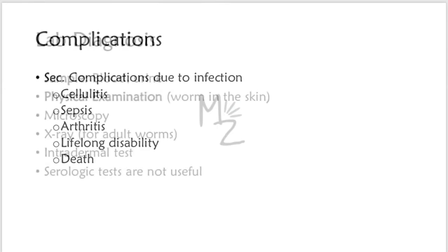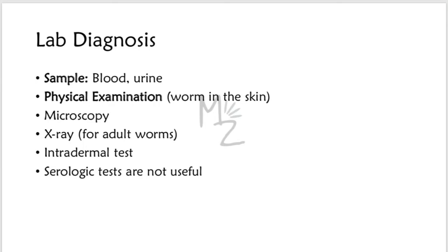Lab diagnosis: samples of blood and urine may be needed. Diagnosis is usually made clinically by finding the worm in the skin. We can also visualize the worm under the microscope, and calcified worms can be seen on X-ray.